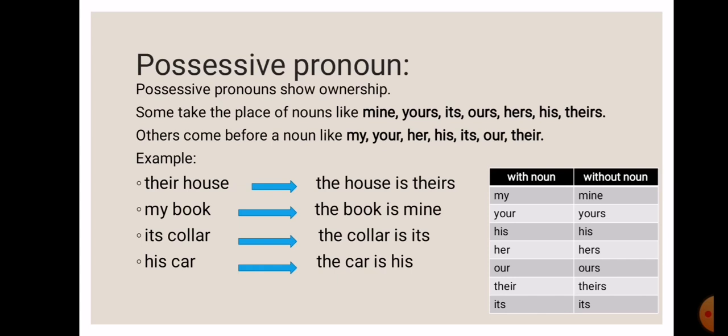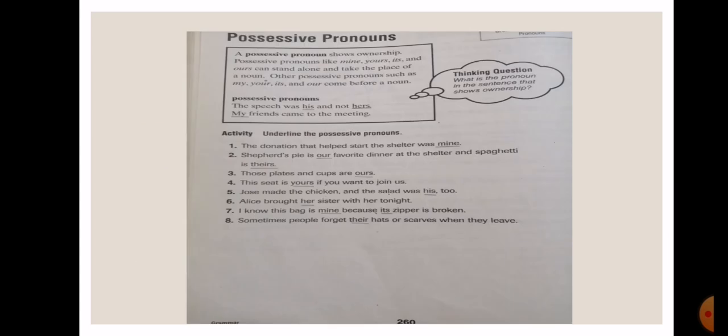Now on the right, the table shows you the possessive pronouns with a noun and without a noun. With noun it will be my, without noun mine. Your converts to yours. His will remain the same in both cases. Her becomes hers, our becomes ours, their becomes theirs. Its remains the same in both cases.